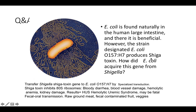E. coli acquired the shigatoxin gene through specialized transduction. The donor was Shigella dysenteriae, which carries the shigatoxin gene. After lysogenization and induction, when the pro-phage cut itself out of the Shigella chromosome, it brought the shigatoxin gene with it. All phage released were recombinant, carrying both phage DNA and the shigatoxin gene. One recombinant phage bound to a neighboring E. coli, injected the DNA, and the shigatoxin gene integrated into the E. coli chromosome — making it lysogenized, with the pro-phage and shigatoxin gene adjacent in the chromosome.